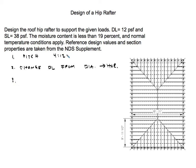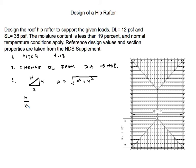To do that, find the hypotenuse of the x and y components. The x component is 12 and the y component is 4, based on the pitch. The hypotenuse h equals the square root of x-squared plus y-squared. Once you have the hypotenuse, divide it by the x component and multiply that ratio by the dead load — in this case 12 psf — to amplify the dead load to its horizontal projection equivalent.